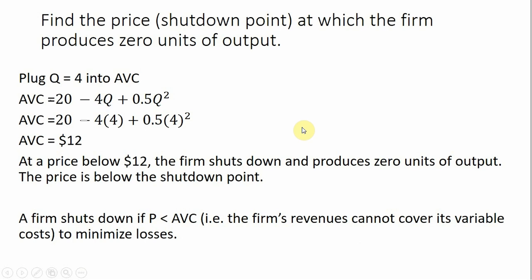Along with this example of average variable cost, we want to find the shutdown point. The nice thing about that is the shutdown point corresponds to the lowest point on the average variable cost curve. So if we take our answer and plug q equals 4 into average variable cost, we get the shutdown point. Average variable cost is $12 when evaluated at 4 units of output. This means at a price below $12, the firm will not produce any units — it will shut down, because anytime price is less than average variable cost, the firm cannot cover its variable costs and will minimize its losses by shutting down.